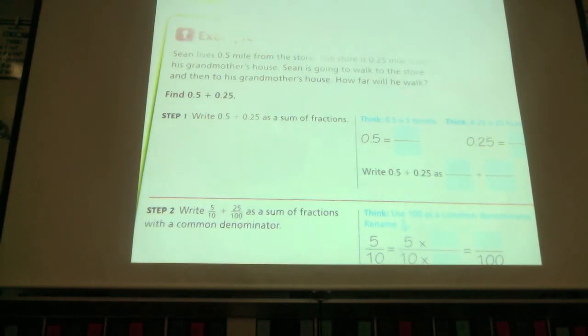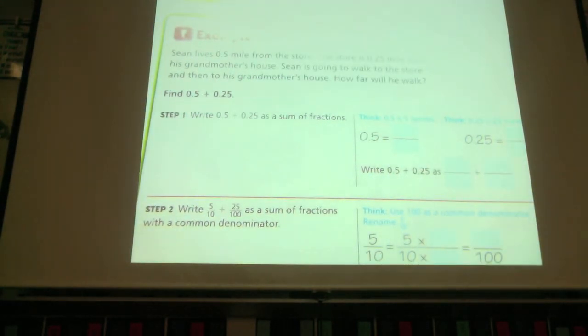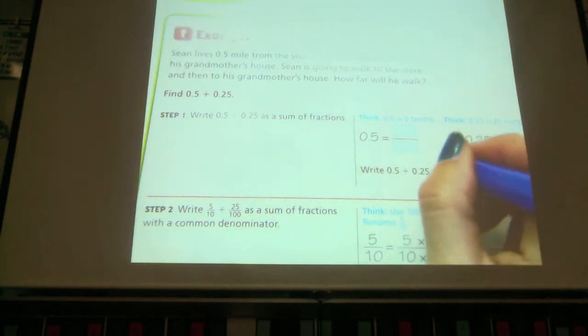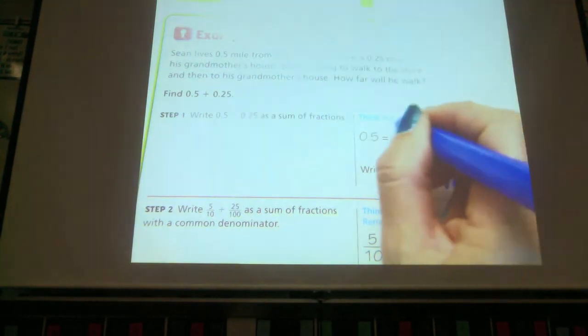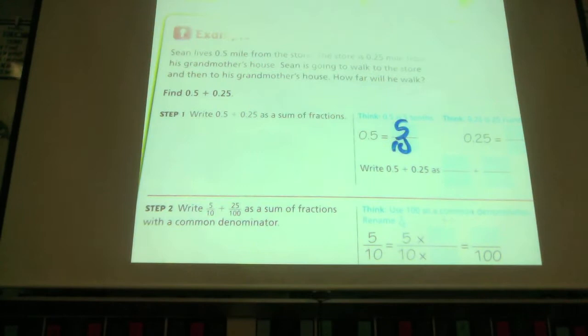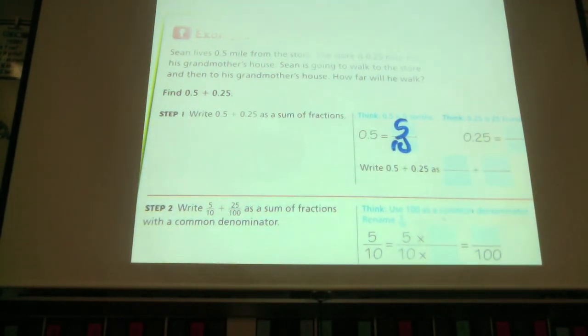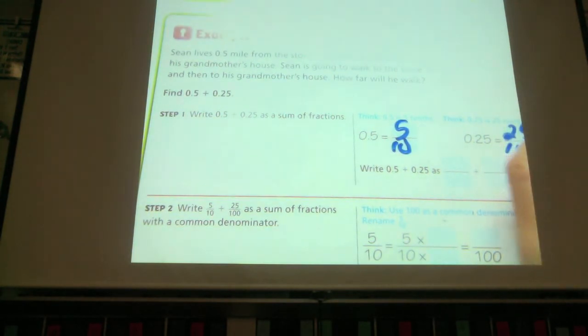Sean lives five tenths mile from the store. The store is twenty-five hundredths of a mile from his grandmother's house. Sean is going to walk to the store and then to his grandmother's house. How far will he walk? We're going to change this first to fractions because we know how to add fractions. What does five tenths change to as a fraction? Five tenths. And what does twenty-five hundredths change to as a fraction? Twenty-five hundredths.